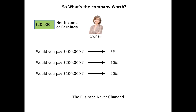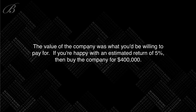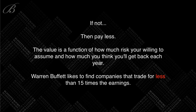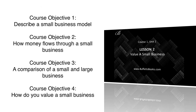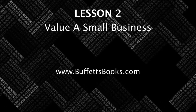The same principle applies to buying stocks. If you overpay for a stock, the percentage return you can expect each year goes down significantly. That's why Warren Buffett spends so much time figuring out what companies are truly worth — he knows overpaying will reduce his yield by 10%, 15%, or 20%. To summarize: we described a small business model, showed how money flows, compared small and large businesses, and covered basic valuation. That concludes lesson two.